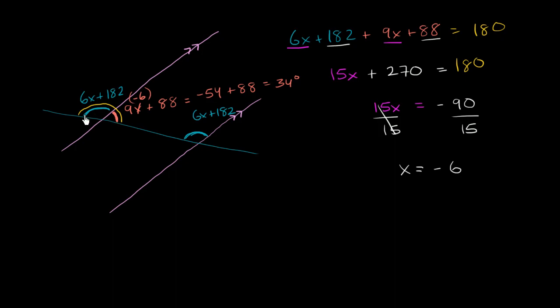The blue angle is going to be 180 minus that. But we can verify that by actually evaluating 6x plus 182. So this is going to be equal to 6 times negative 6 is negative 36 plus 182. So this is going to be equal to,